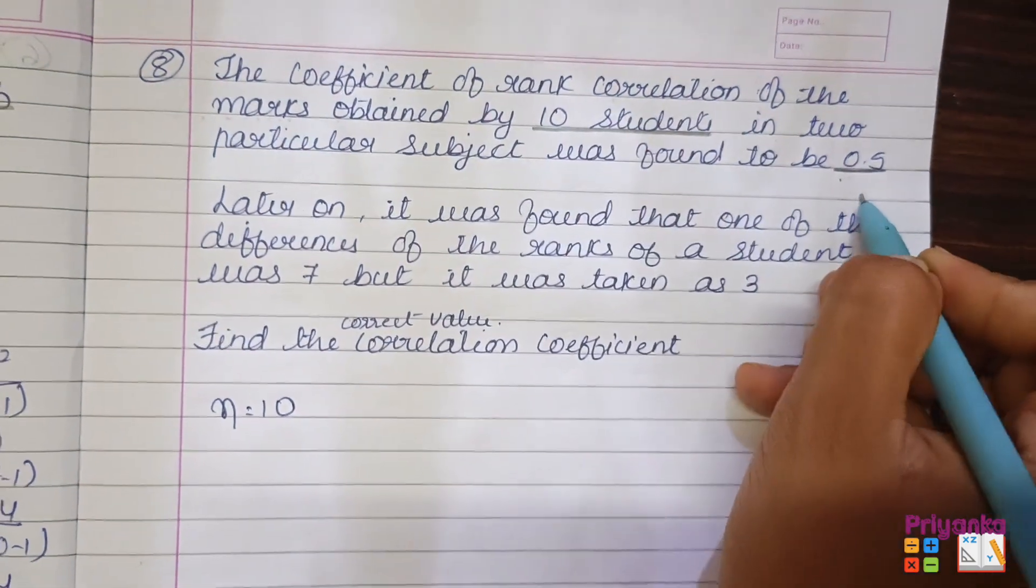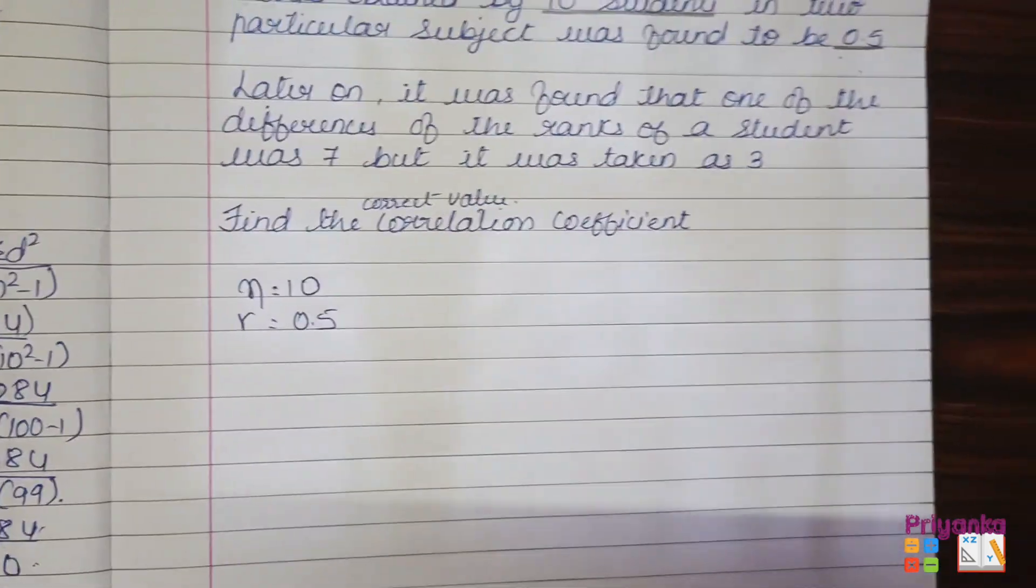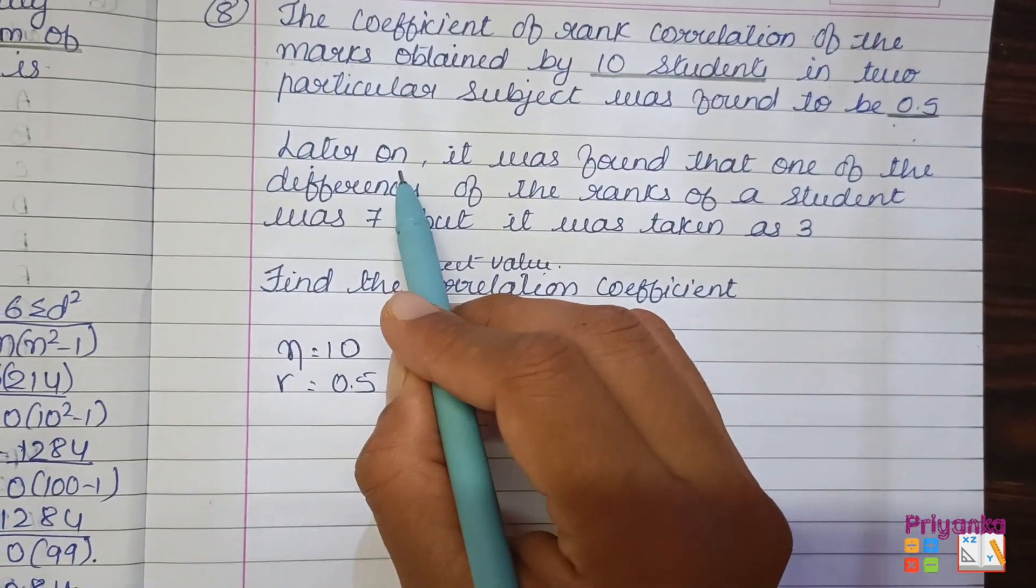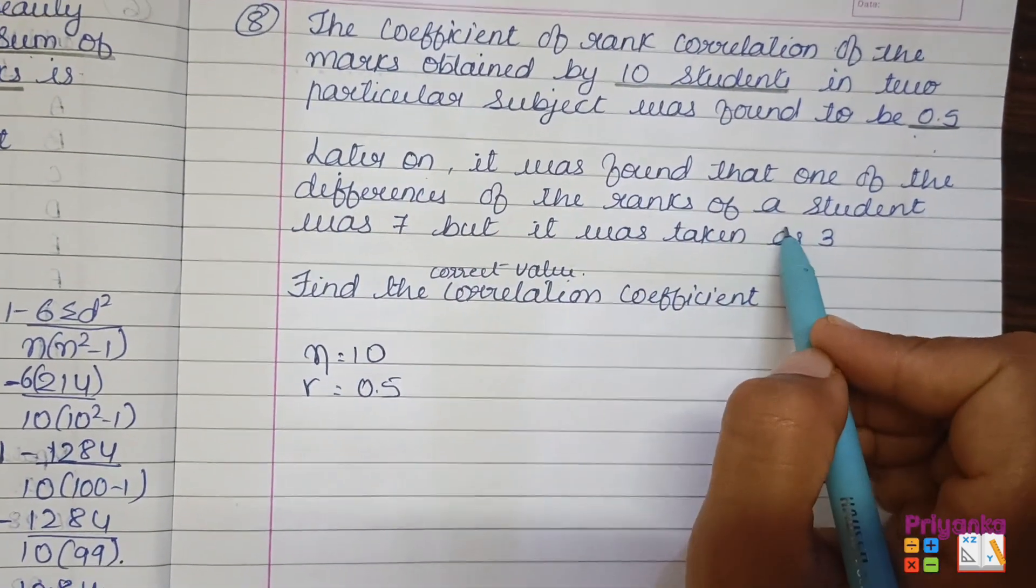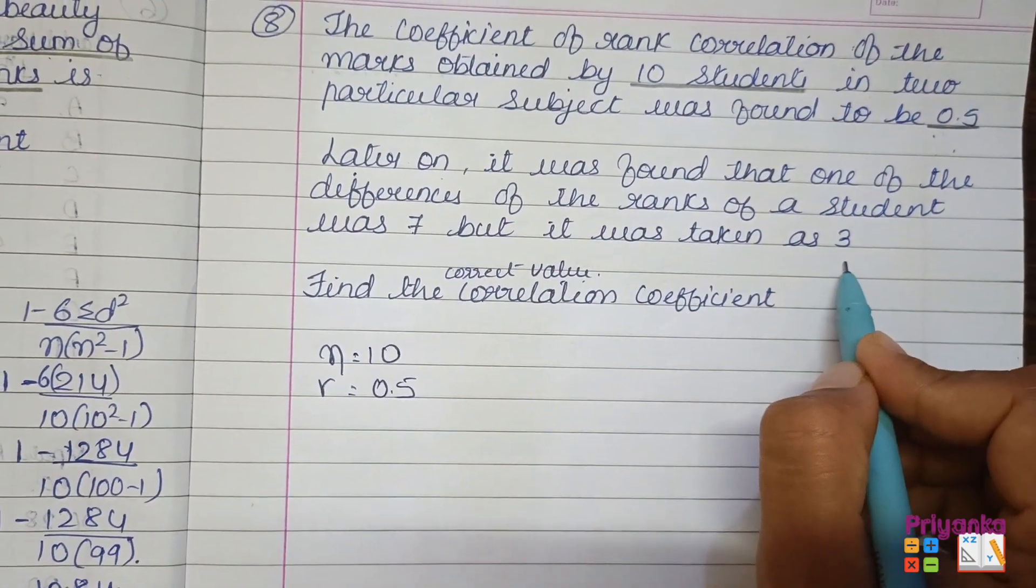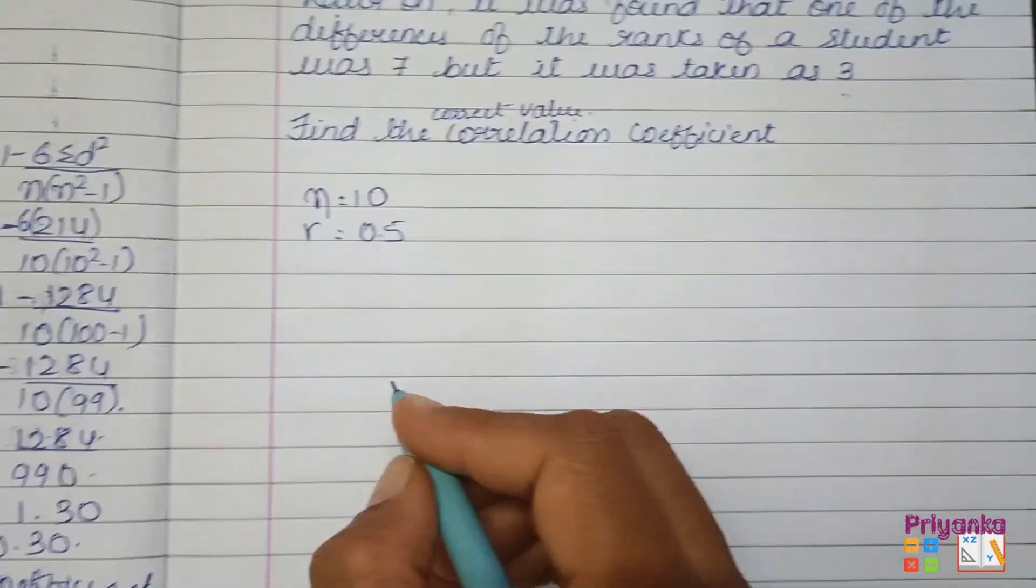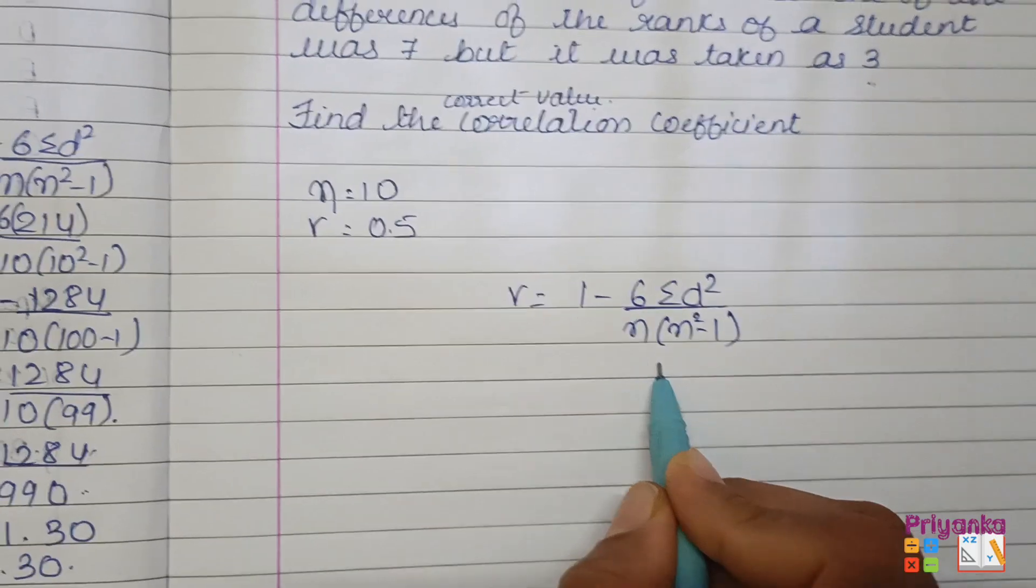In the particular subject was found 0.5, that means rank correlation is 0.5, r is 0.5. Then later on it was found that one of the differences of the rank of a student which was 7 but by mistake it has been taken as 3. So that correction has to be made on this question.